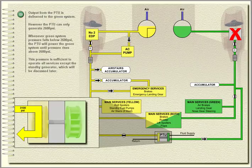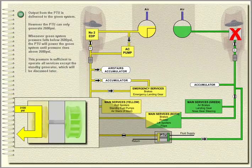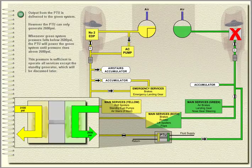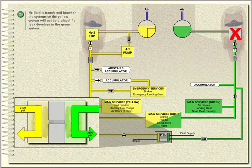However, the PTU can only generate 2,600 PSI. Whenever green system pressure falls below 2,600 PSI, the PTU will power the green system until pressure rises above 2,600 PSI. This pressure is sufficient to operate all services except the standby generator, which will be discussed later. No fluid is transferred between the systems, so the yellow system will not be drained if a leak develops in the green system.